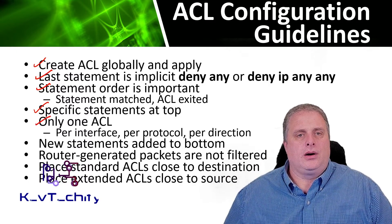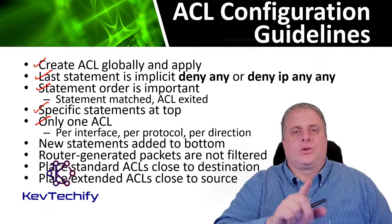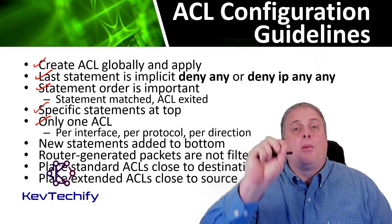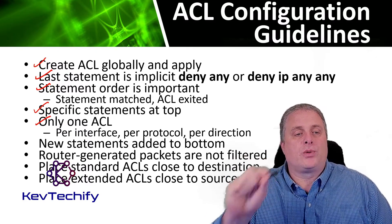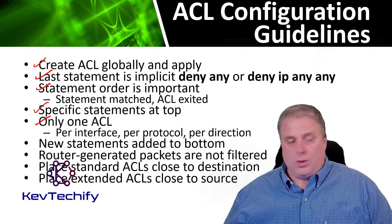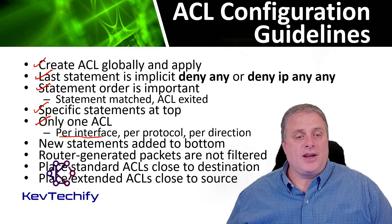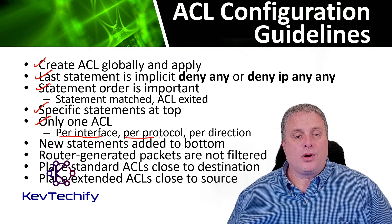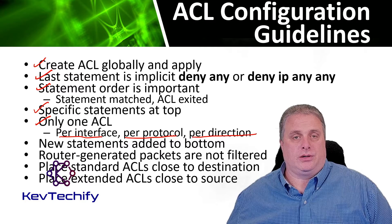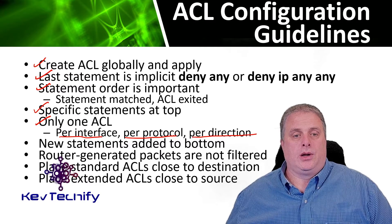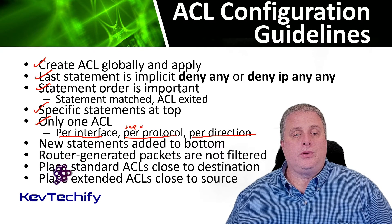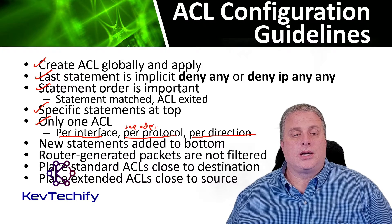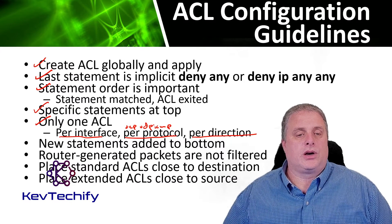Remember that only one access control list is allowed per interface, per protocol, per direction. Once again: per interface, per protocol, per direction. The protocol here refers to TCP, UDP, and ICMP — those are our protocols.